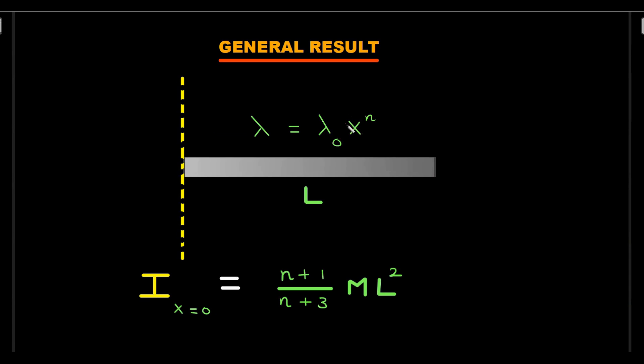If lambda is lambda naught into x, and this is the general rule - I'm curious to know if it is x power n. This is the general formula. Just integrate it. The result is more fascinating than the procedure. See this result - in the normal case of uniform rod, n is 0, lambda equals lambda naught which has no power, so you have n equals 0, so the famous formula is 1 by 3 ML squared. For n equal to 1, which is our question, you have ML squared by 2. If in a future question lambda naught x squared is written, then 2 plus 1 over 2 plus 3, which is 3 by 5 ML squared.